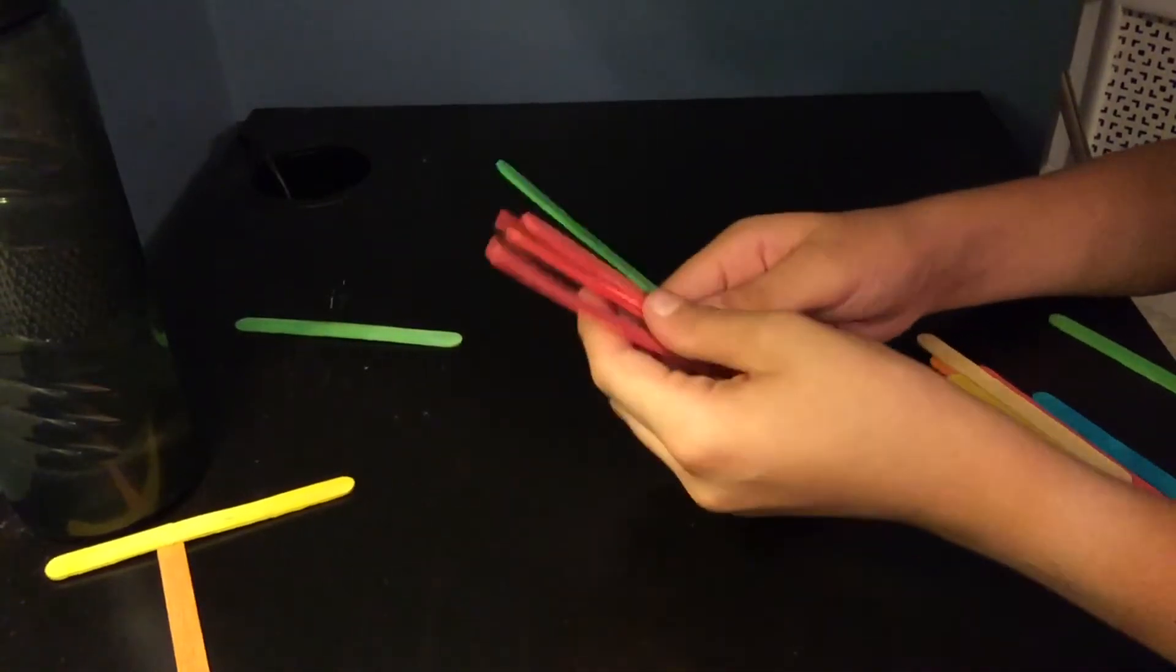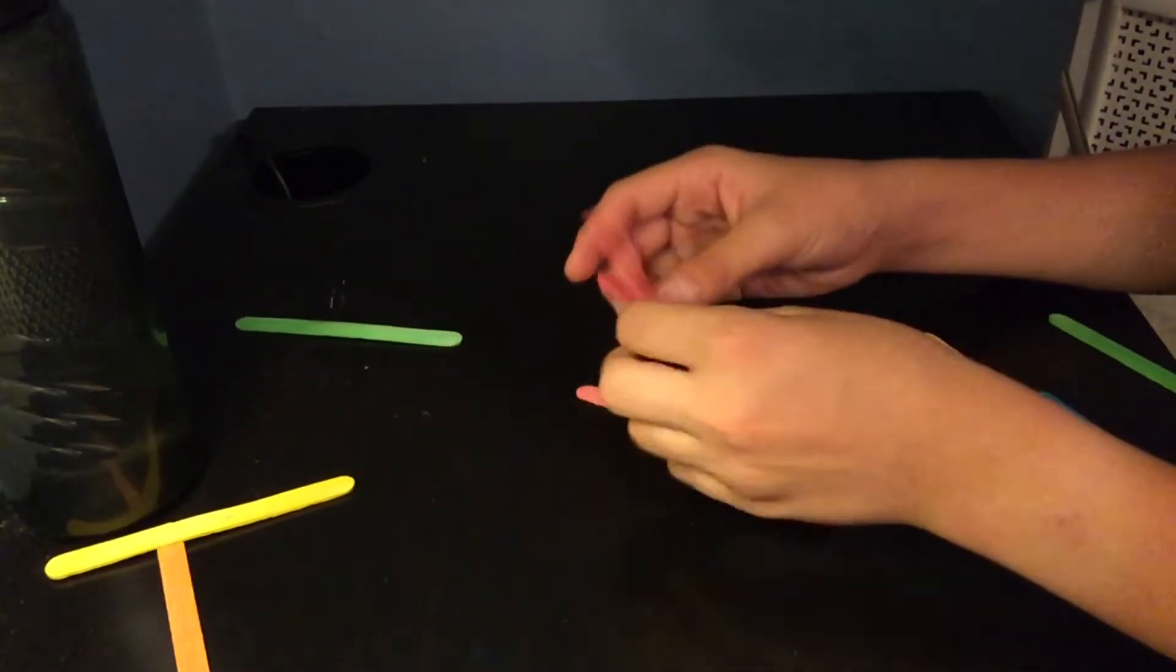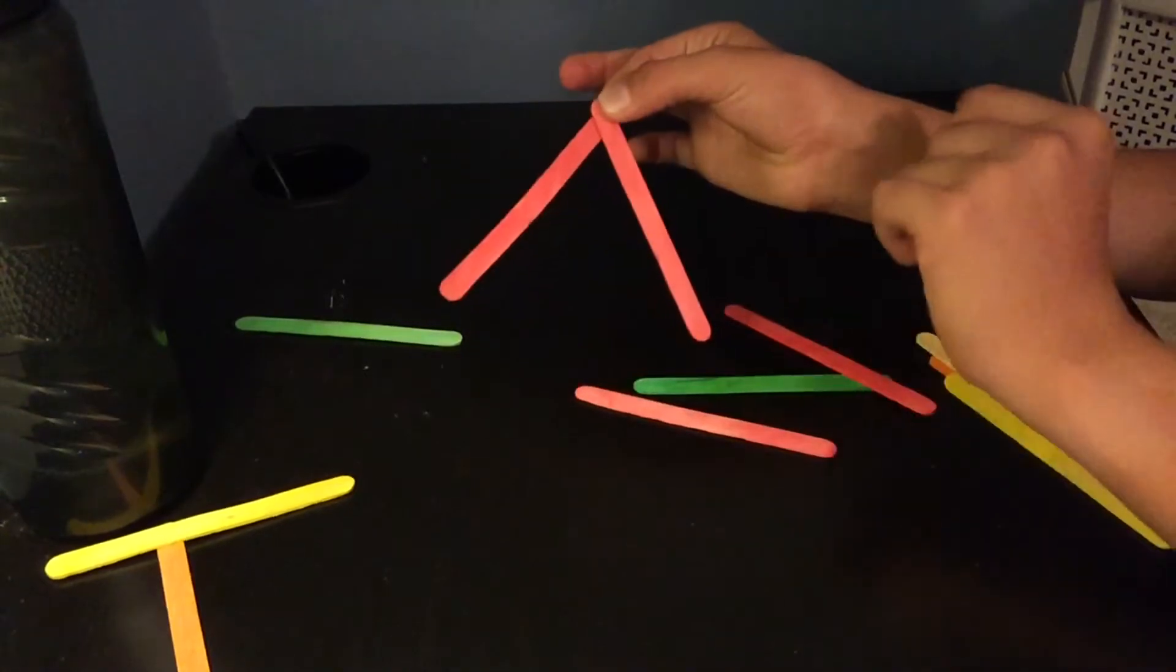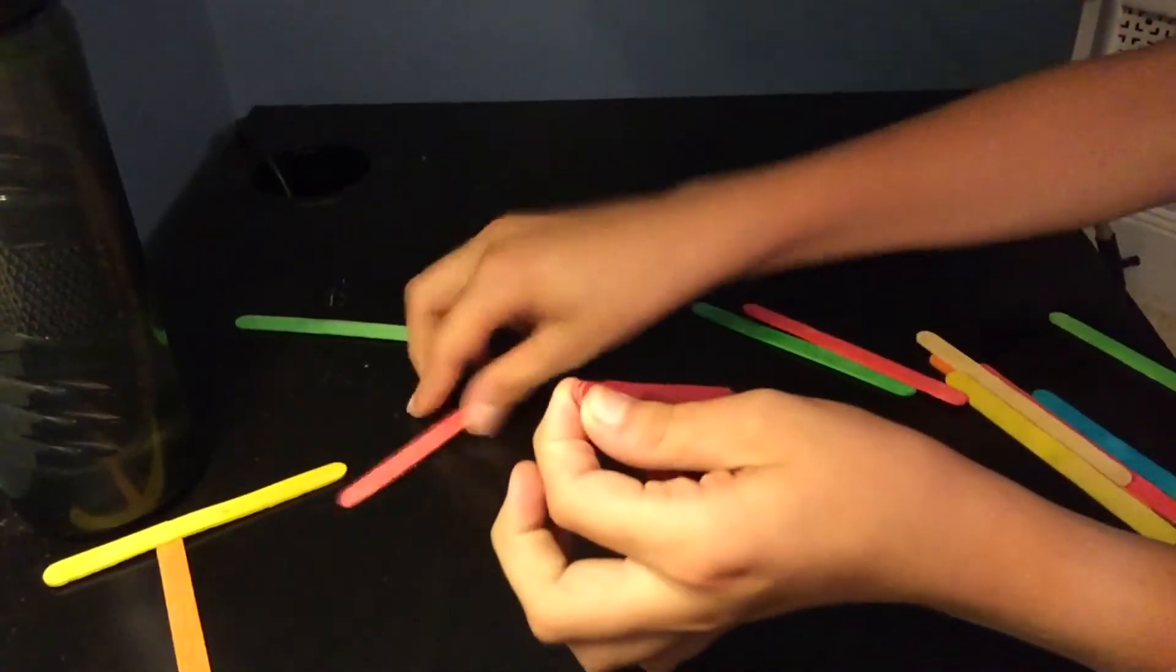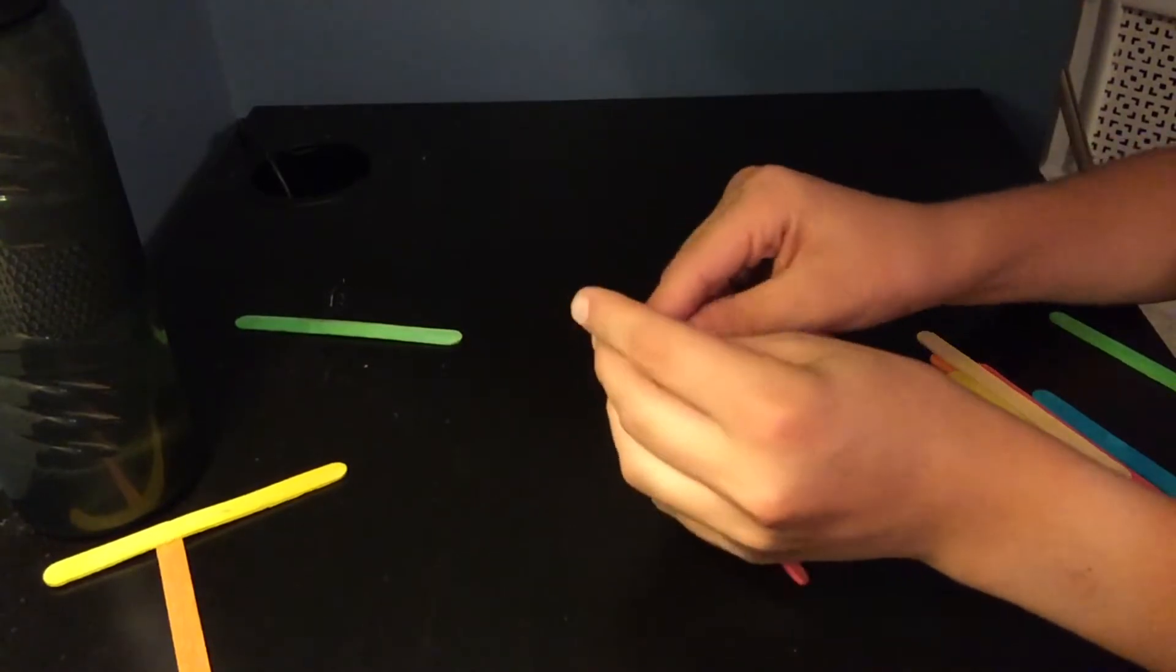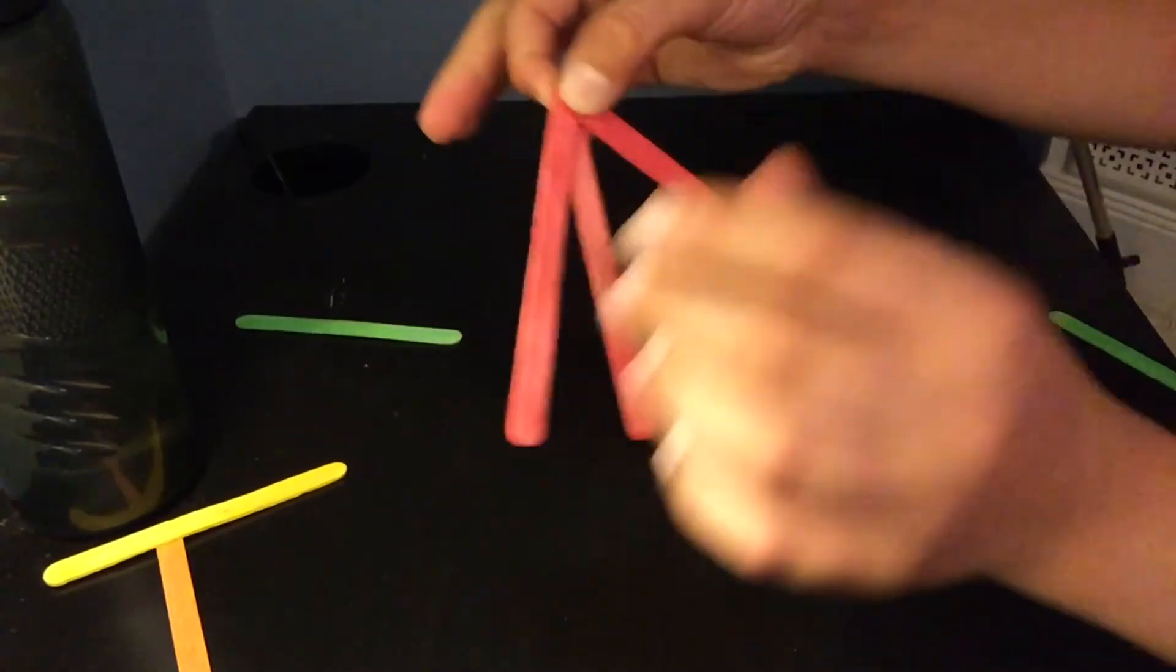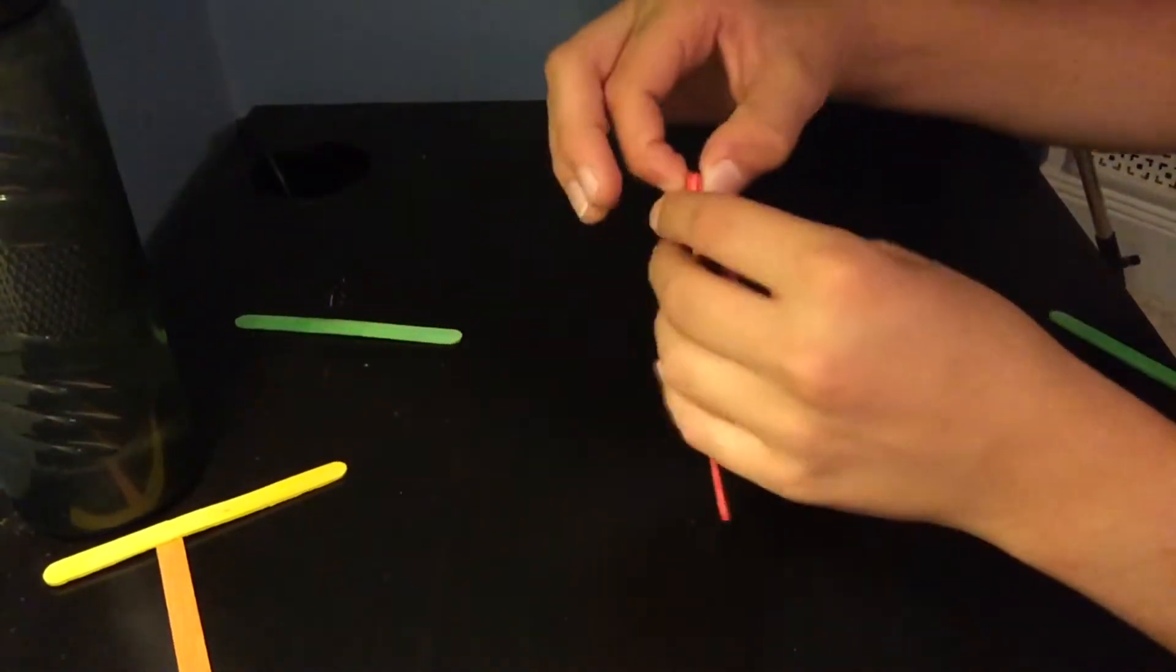And the color doesn't matter. They just have to be the same popsicle sticks. So the first thing you do is make a triangle, doesn't matter which one's over which. Take a third popsicle stick and go on the back of those two, like that. It has to be in the back, otherwise this won't work.